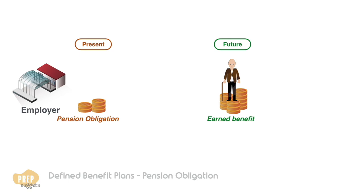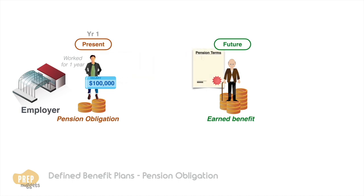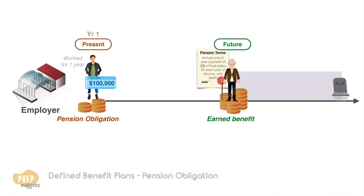Let's go with a simple example of a small company with just one employee who has worked for one year, and his starting salary for the year was $100,000. Under the company's defined benefit plan, he's promised an annual end-of-year payment of 1% of his final salary for each year of service, all the way until his death.